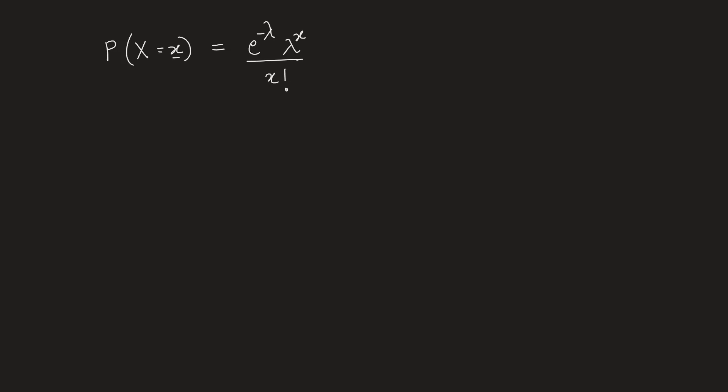Where we see that this x is a particular value for the random variable and lambda here is the mean of the distribution.